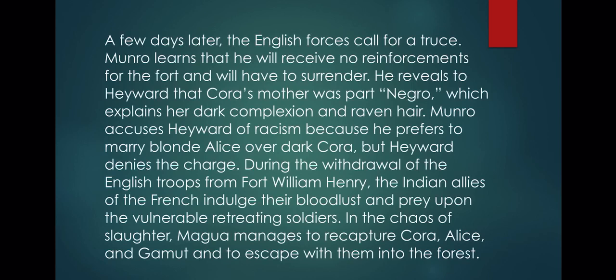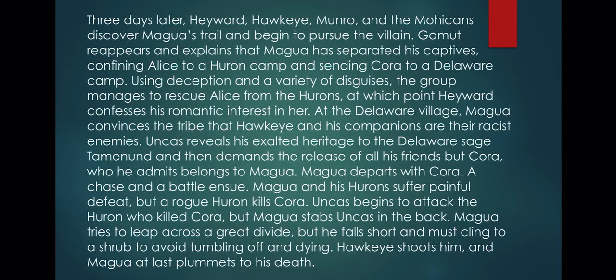Three days later, Howard, Hawkeye, Monroe, and the Mohicans discover Magwa's trail and begin to pursue the villain. Gamet reappears and explains that Magwa has separated his captives, confining Alice to a Huron camp and sending Cora to a Delaware camp, using deception and a variety of disguises. The group manages to rescue Alice from the Hurons, at which point Howard confesses his romantic interest in her.